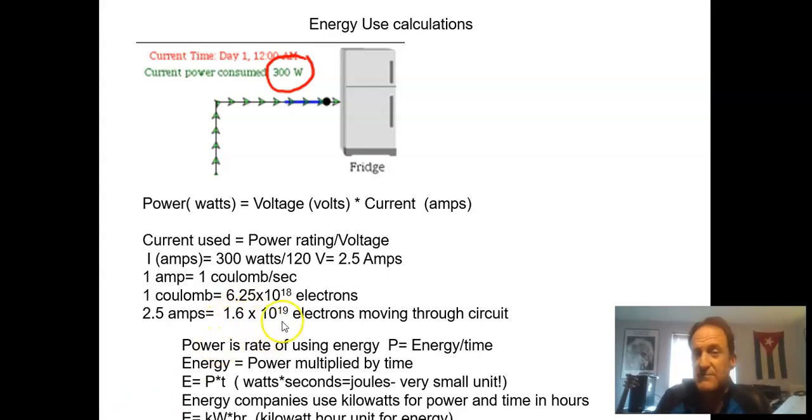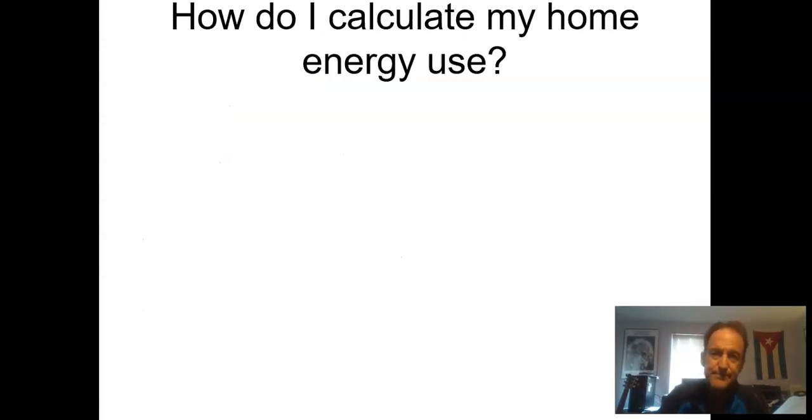The current use would be 300 watts divided by 120 volts, or 2.5 amps, which corresponds to 1.6 times 10 to the 19 electrons moving back and forth through the circuit. That's what the AC does - it basically generates energy in a wave so the electricity oscillates back and forth. The power company does not generate electrons through your wire, it just puts energy into the wires to move the electrons to and fro, and that simulation to and fro basically transfers energy through the circuit. Again, power is energy divided by time. We rearrange that - energy is going to be power multiplied by time. If you use watts and seconds it you get joules, a very small unit. You prefer to use a kilowatt hour.